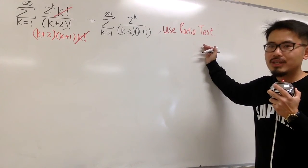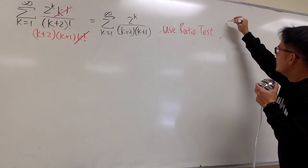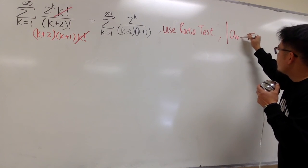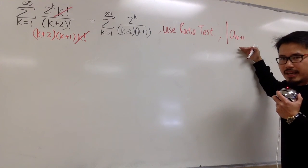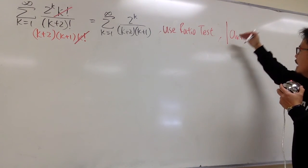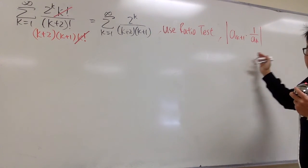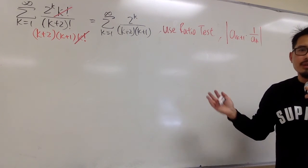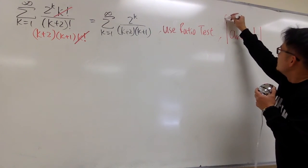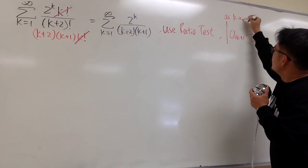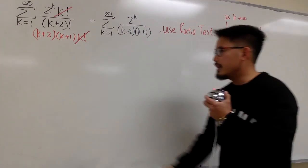And to do the ratio test, we have to work out this ratio: absolute value of a_{k+1} over a_k, but it's the same as saying a_{k+1} times 1 over a_k, and then we take k goes to infinity. So this is what we have to work out, and let's do it right here.